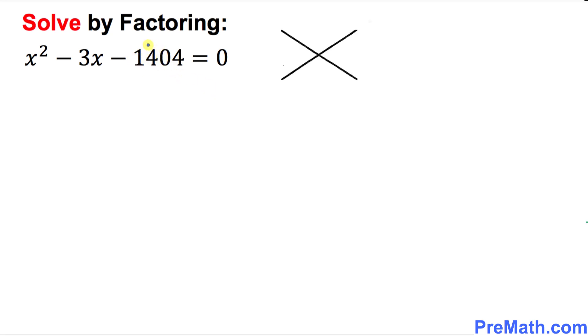The very first thing we are going to do is look at this number, the constant term negative 1404. Write it down on the top of this X-factor, and then the middle number, the coefficient of x, is going to go at the bottom. We are only interested in the positive part 1404. We'll take care of the negative sign a little bit later.